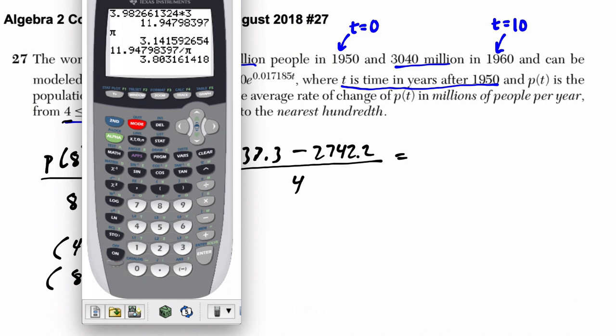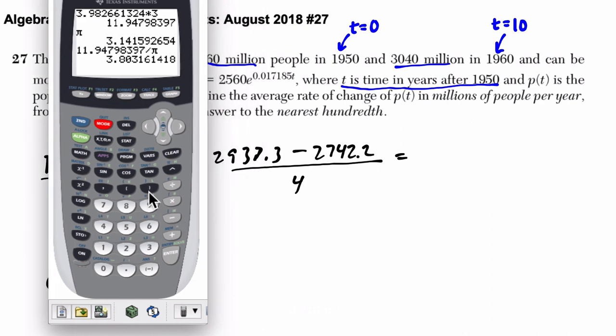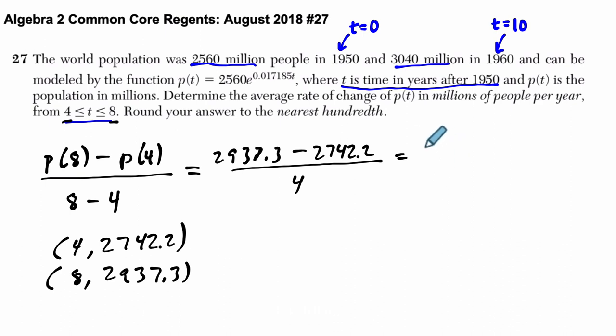When I enter this in the calculator, I'm very careful, enter my numerator in parentheses, so it's 2937 minus 2742.2, close parentheses, and then divide by 4, we get 48.775, and they want it to the nearest hundredth. So it's 48.78.